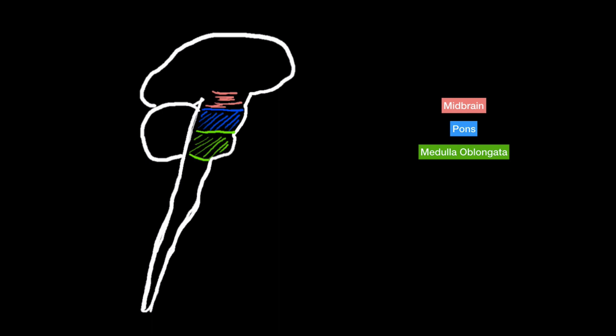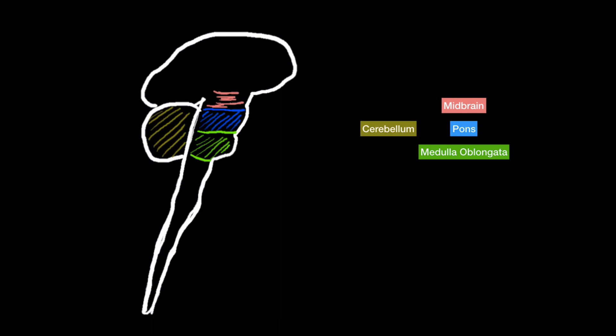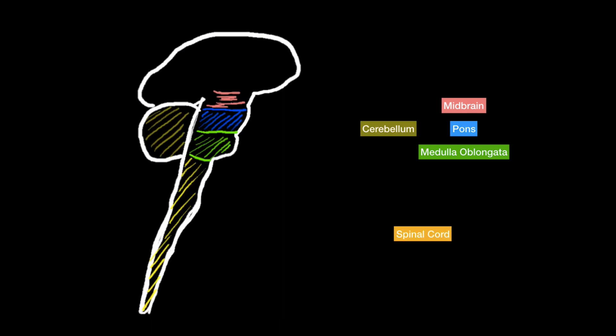Hello and welcome to another video. In this video I'm going to talk about the medulla oblongata. Medulla oblongata is located right about here, under the pons and midbrain, and also located in front of the cerebellum. Just for orientation's sake, the spinal cord is located right about here.